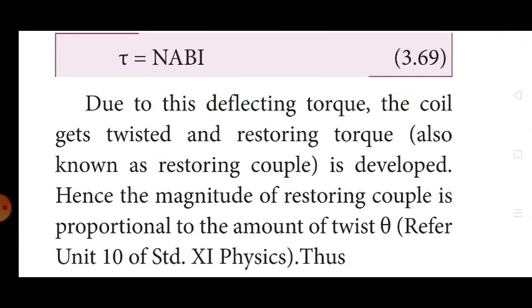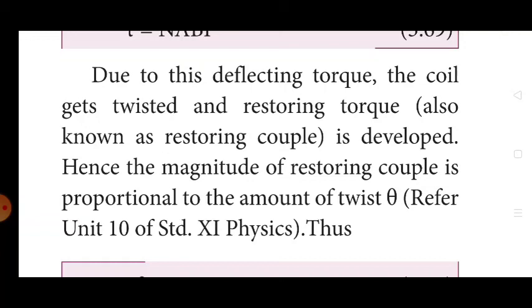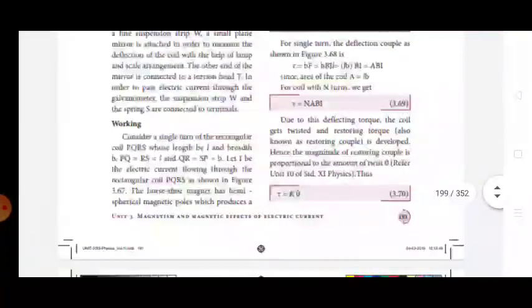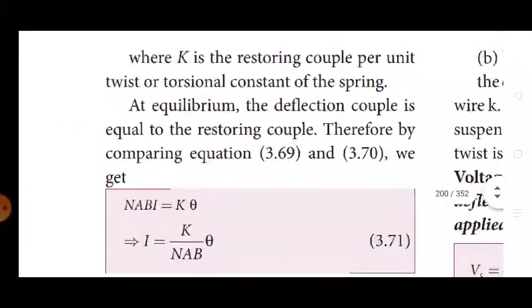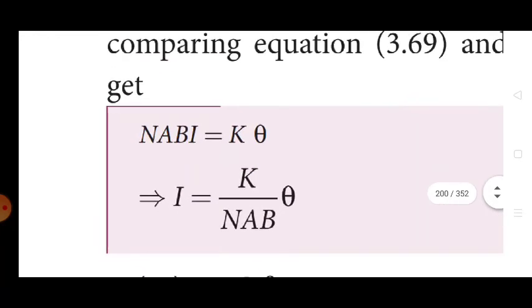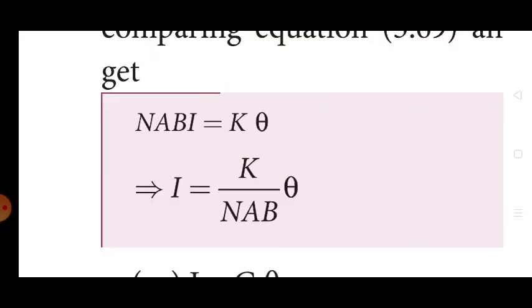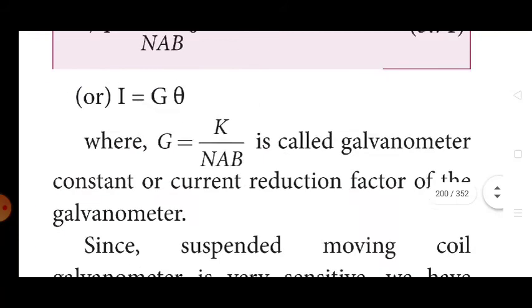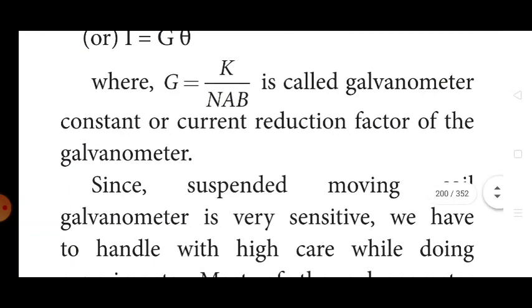For a single turn, the deflecting couple is: τ = BIL·B = BIL·B = ABIB = ABI, since the area A = LB. For a coil with N turns: τ = NABI. Due to this deflecting torque, the coil gets twisted and a restoring torque (restoring couple) is developed. The magnitude of the restoring couple is proportional to the amount of twist θ: τ = Kθ, where K is the restoring couple per unit twist (torsional constant of the spring). At equilibrium, deflecting couple = restoring couple, so NABI = Kθ, giving I = Kθ/(NAB) = Gθ, where G = K/(NAB) is the galvanometer constant or current reduction factor.